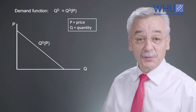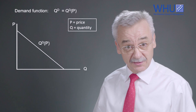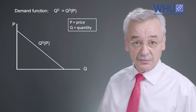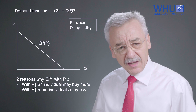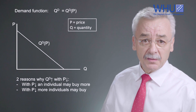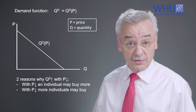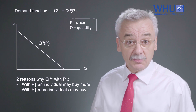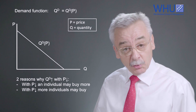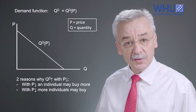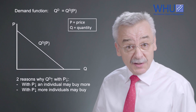Let us focus on the first factor: the price of the good. We can write down a demand function where Q stands for the quantity consumers want to buy and P is the price. In a price-quantity diagram, with price on the vertical axis and quantity on the horizontal axis, the demand curve runs from the upper left to the lower right. Why do people buy more at lower prices? Two reasons: individuals may want to buy more at lower prices, and more people enter the market who didn't want to buy at higher prices.